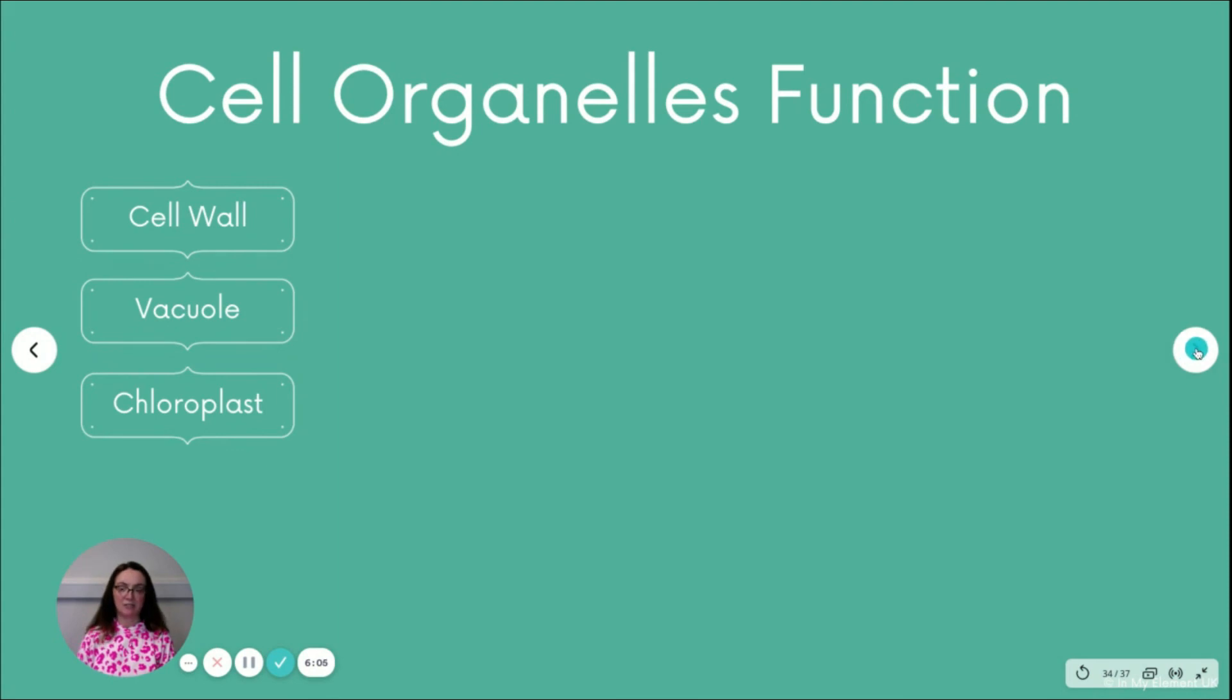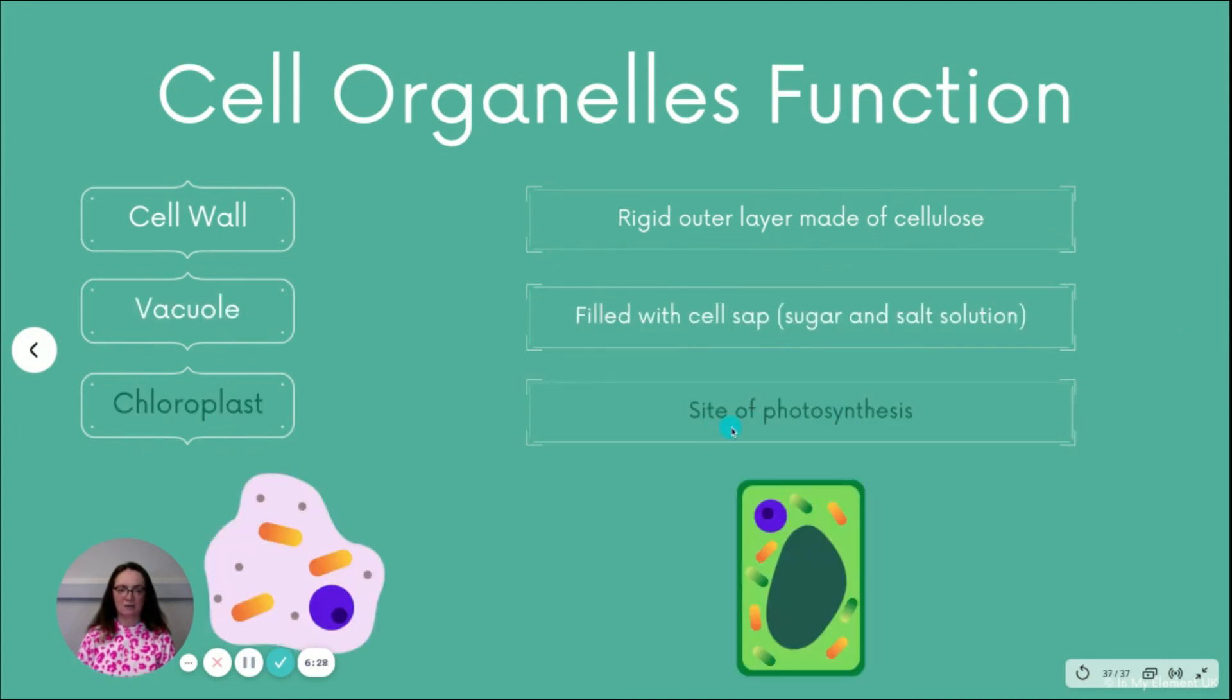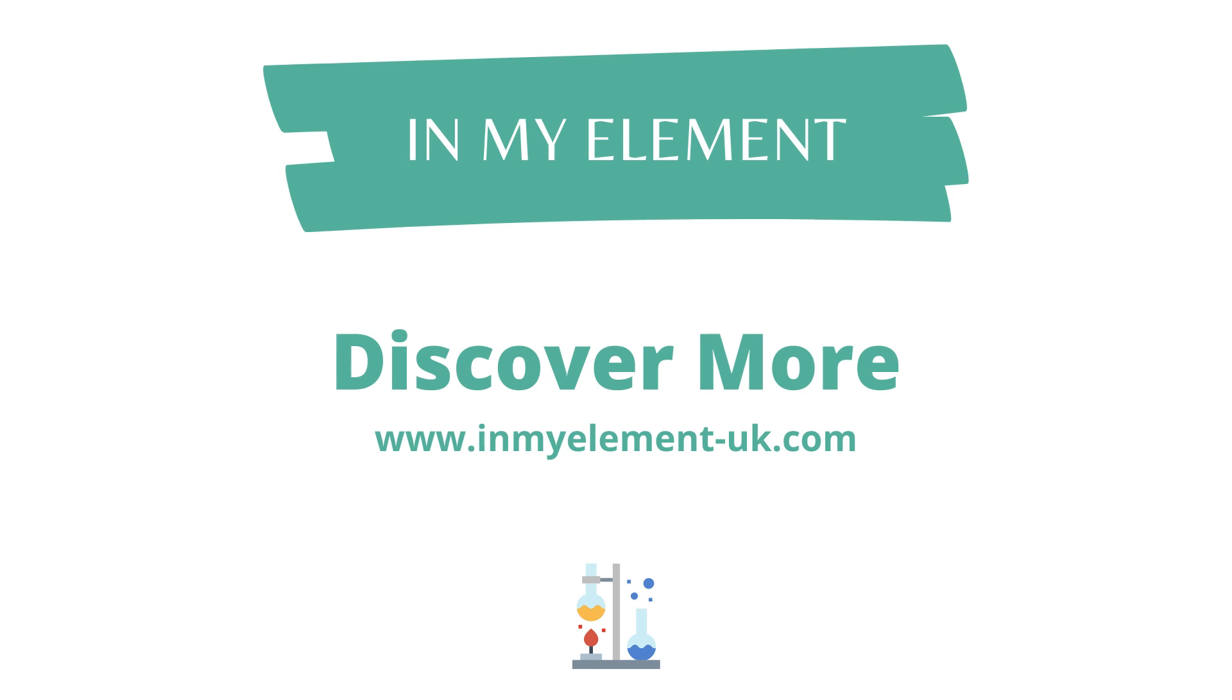Then the three organelles that appear just in the plant cell. Cell wall, rigid outer layer, made of cellulose. They may ask you that. They may say, which organelle in a plant cell is made of cellulose? And you will know to label that as the cell wall. Vacuole, like we said, filled with cell sap. So sugars and salt solution. And then the chloroplast, you've got the site of photosynthesis.